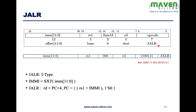JALR is actually of I-type. The immediate value is calculated as a sign extension of 12 bits, since I-type has a 12-bit immediate value. The PC is set to the source register plus the immediate value, and then the LSB is set to 0. As per this specification, this is how we calculate the offset for the PC. PC plus 4 will be stored in the destination register.